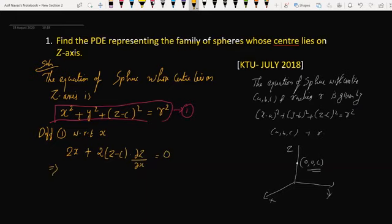This implies 2x + 2(z - c)P = 0, where P = ∂z/∂x. So (z - c)P = -x. I am calling this equation number 2.